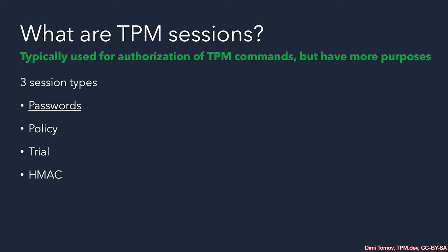To put things into perspective, when we issue a TPM command, there are three authorization slots that we can use. Most commands use only one authorization slot, some use two, and rarely we need all three. To protect the communication of the TPM, we can put an HMAC session in one of these authorization slots. Because a policy session is built on top of an HMAC session, we can also use a policy session to protect against machine-in-the-middle attacks. The highest guarantee we can receive is when we enable parameter encryption.